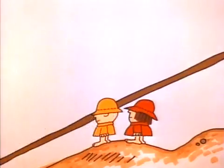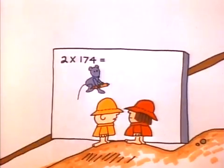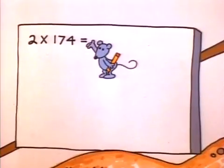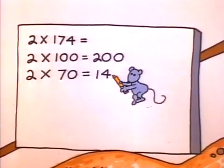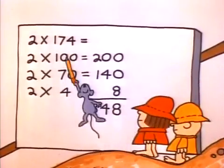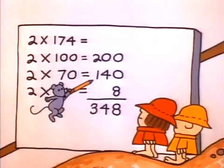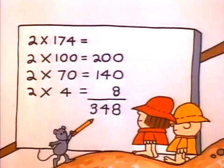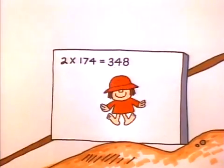Now if you want to multiply two times one hundred and seventy-four, or some big number like that — two times one hundred and seventy-four equals two times one hundred, plus two times seventy, plus two times four. So two times one hundred and seventy-four equals two hundred, plus one hundred and forty, plus eight — that's three hundred and forty-eight. It's elementary!